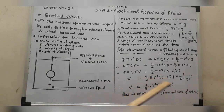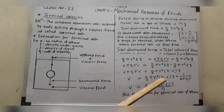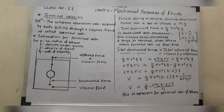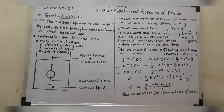Pi cancels, one r is cancelled from r³, leaving r². Therefore the terminal velocity is: v = (2/9) r² (ρ − σ) g / η. This is the expression for the terminal velocity of a sphere falling through a viscous liquid. Using this formula, v = (2/9) r² (ρ − σ) g / η, you can find the terminal velocity in numerical problems.